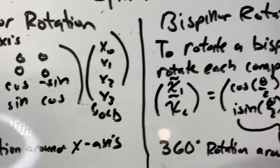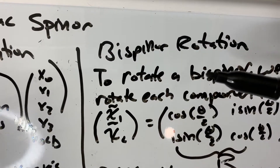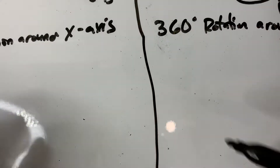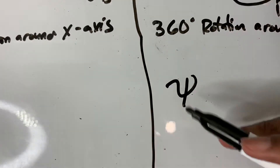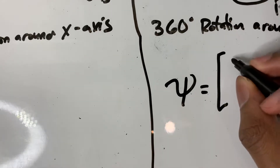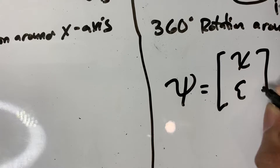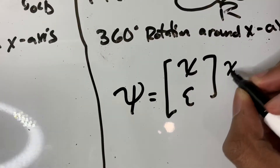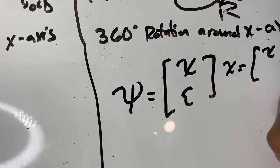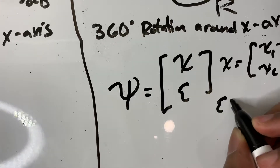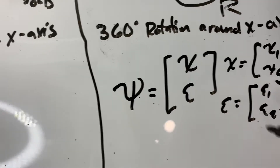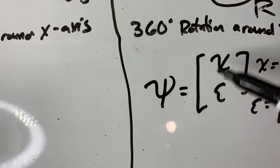For spinors, however, it's a bit different. If you can recall from our last video, we can take the Dirac bi-spinor and write it in terms of two components. Now these aren't really two components, since chi is just the Weyl spinor — the left chiral one — and epsilon is the right chiral spinor. So technically it's four components, but kind of hidden in two.